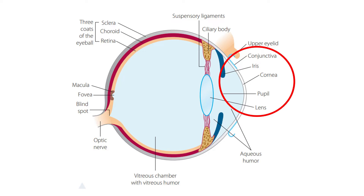The cornea provides protection for the lens and also acts to refract the light entering the eye. The pupil adjusts the amount of light entering the eye. The coloured part of our eye is referred to as the iris, and it is the muscles in the iris that control the contraction and dilation of the pupil. The lens is the clear part of the eye behind the iris that helps to focus light and images onto the retina.